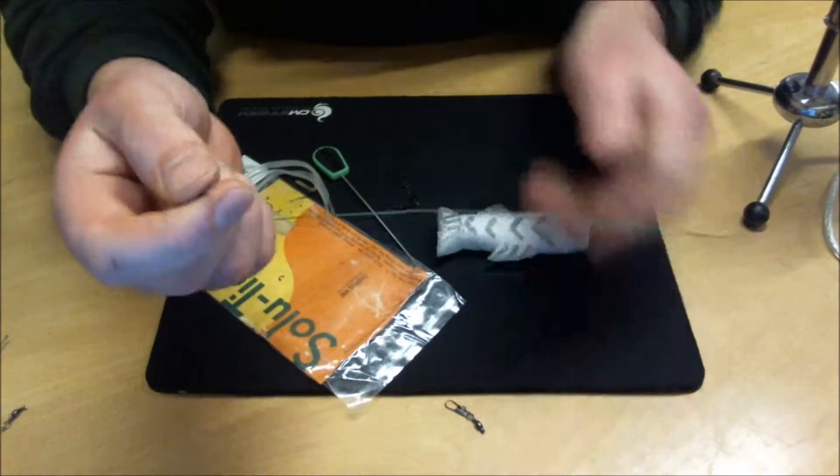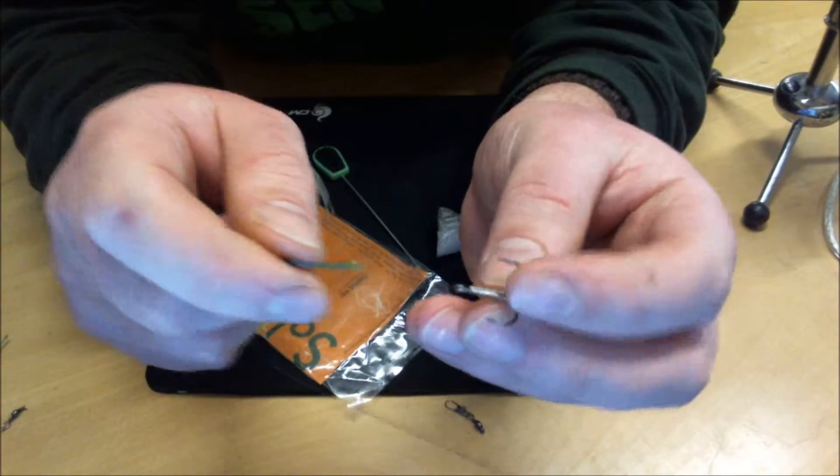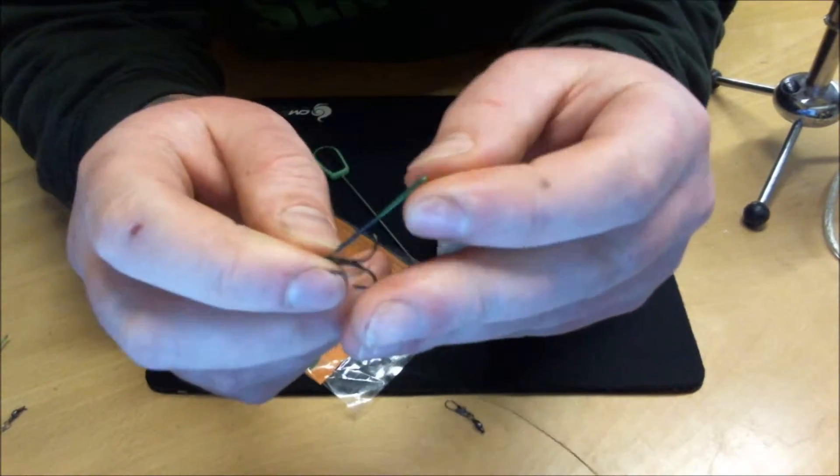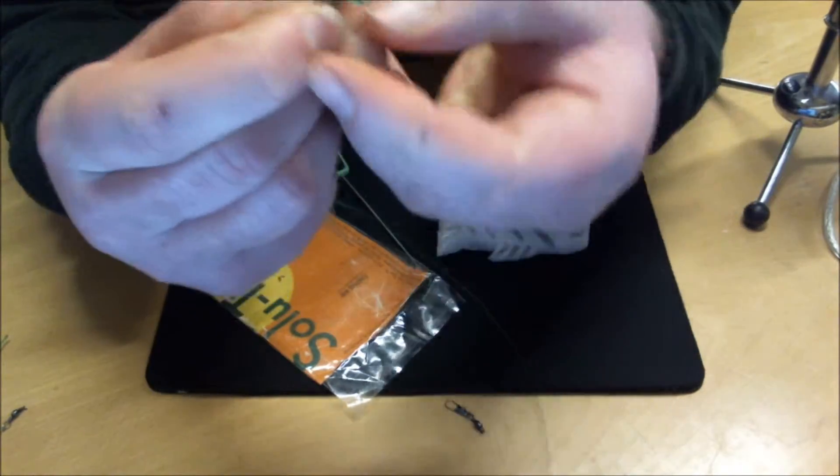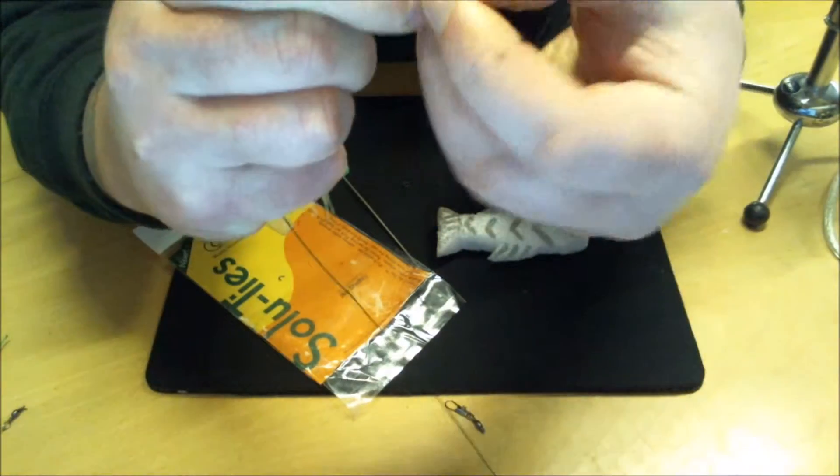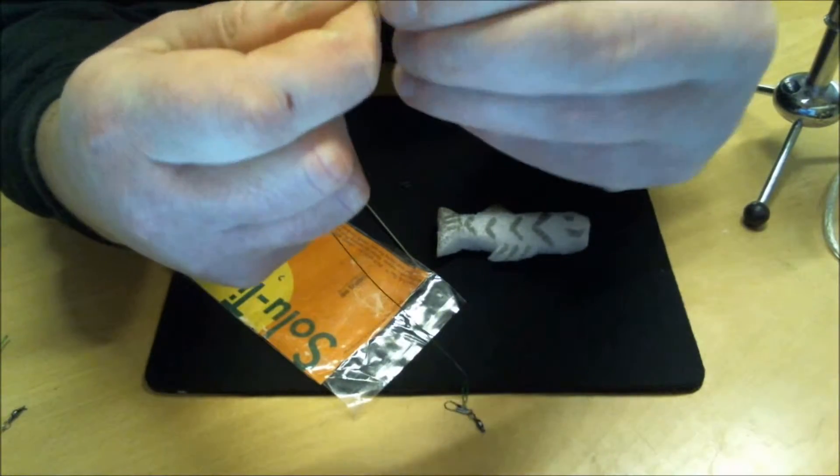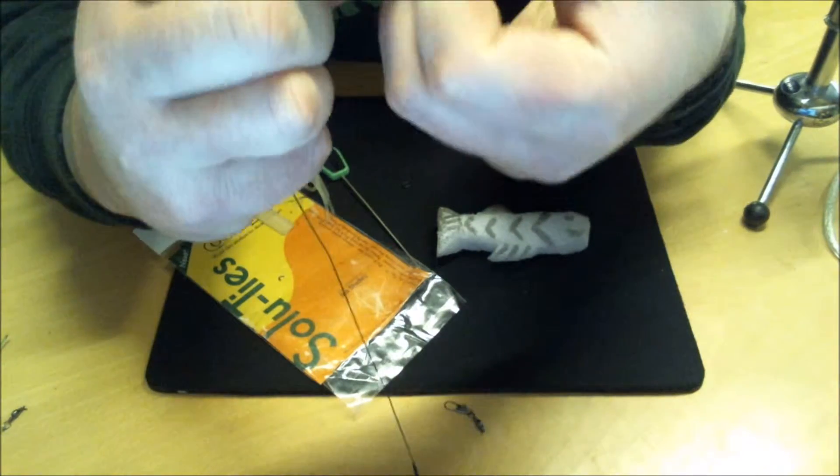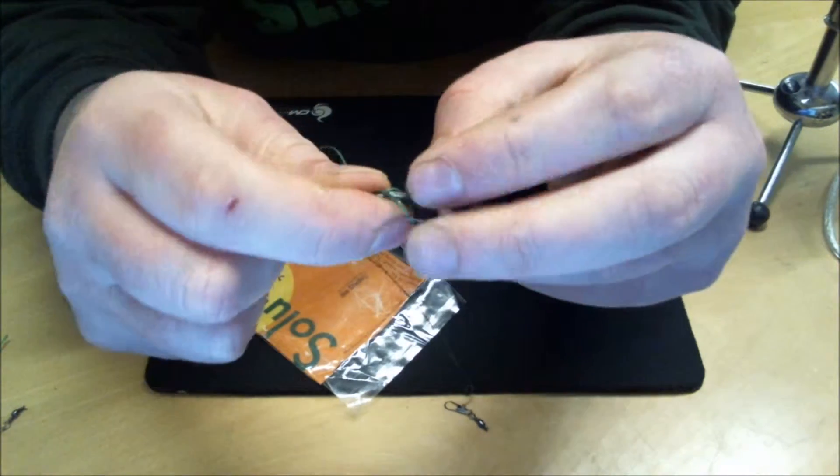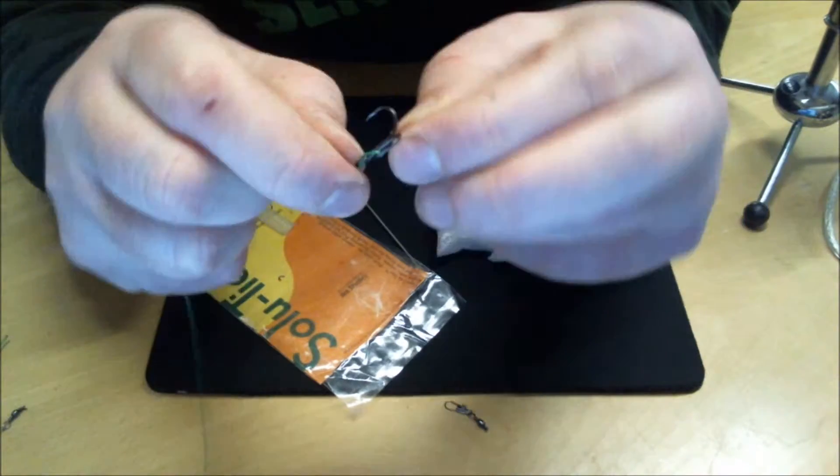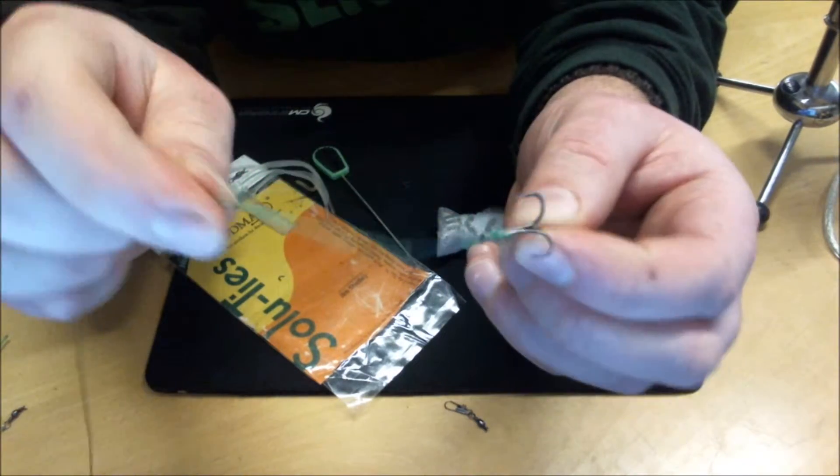And then what I like to do is, you can put your hook on several different ways. You can use another quick link, another quick change swivel, but one way I like to do it is push the loop of the trace through the treble, and then go over each hook of the treble. You can just go over two and it'll sit on the top like that, but if there's enough room to do so, I like to go over all three. So that then can slide all the way down the hook, locking on. That's the hook properly on the trace, and that ain't going anywhere.